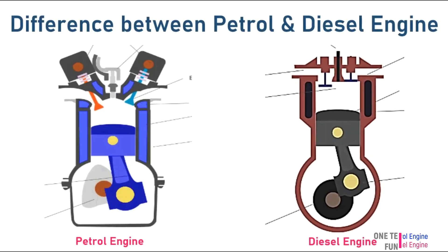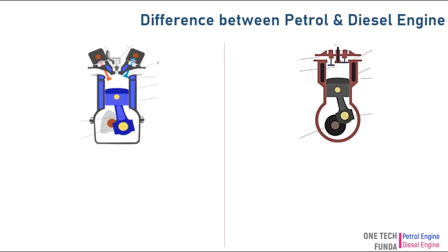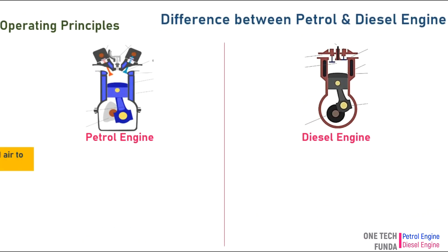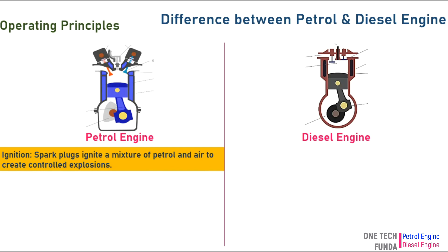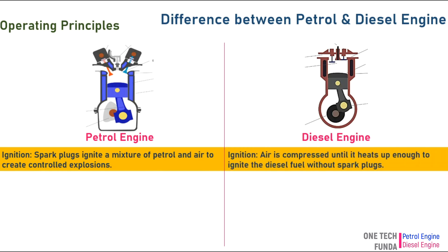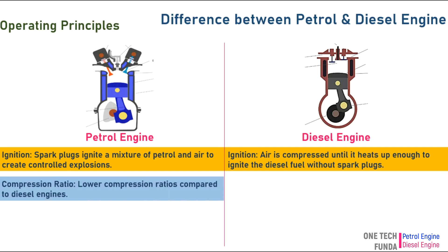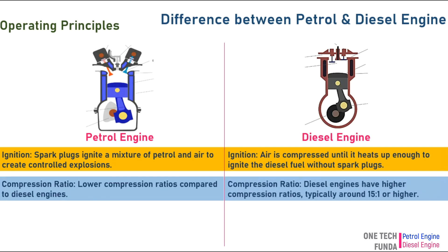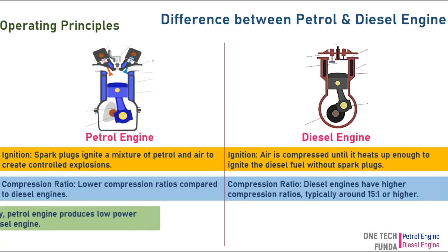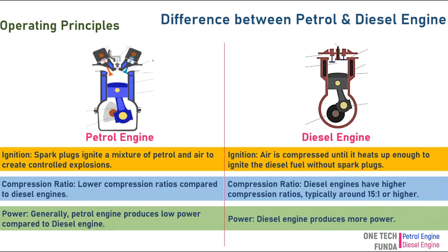Now let's see the differences between petrol and diesel engines. In a petrol engine, spark plugs ignite a mixture of petrol and air to create controlled explosions. In a diesel engine, air is compressed until it heats up enough to ignite the diesel fuel without spark plugs. Petrol engines have lower compression ratios compared to diesel engines, which typically have ratios around 15 to 1 or higher. Generally, petrol engines produce less power compared to diesel engines, while diesel engines produce more power.